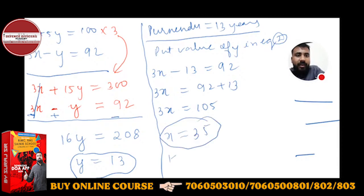X equals 35 means Karan's age is 35 years. And what will be Hukum? Hukum's age is nothing but 100 minus X, which means 100 minus 35 is equal to 65 years. So simple.